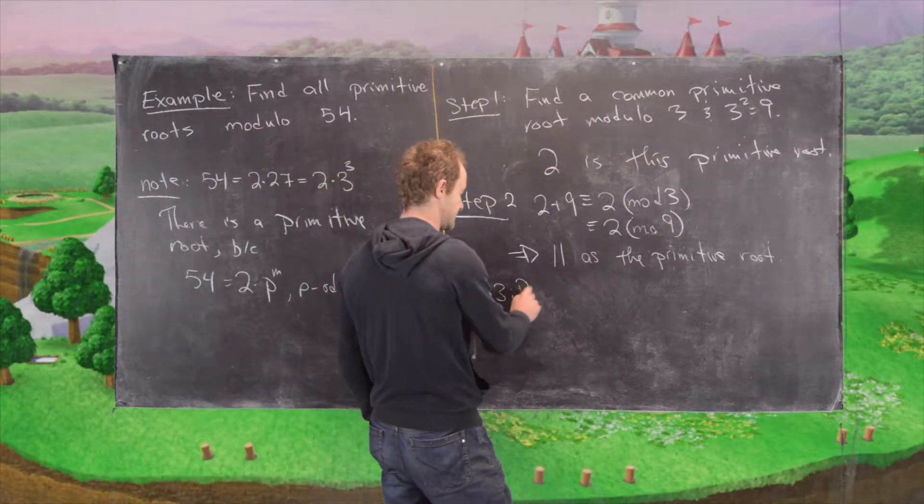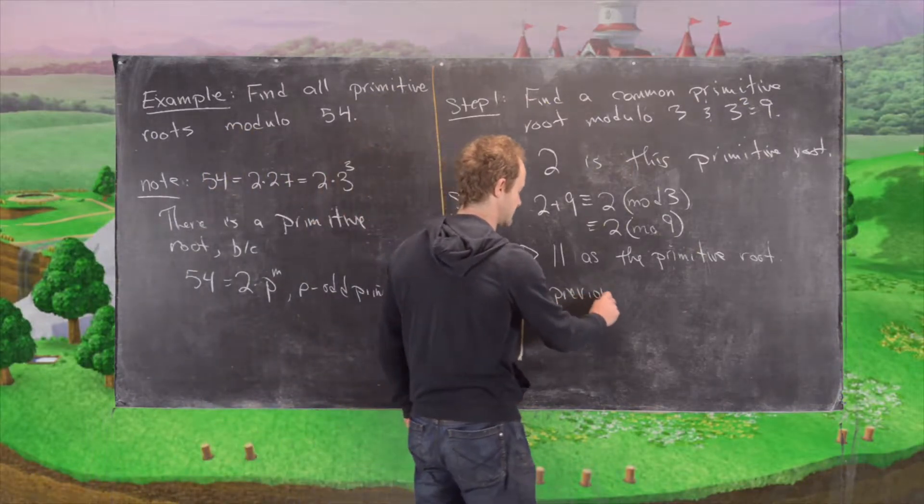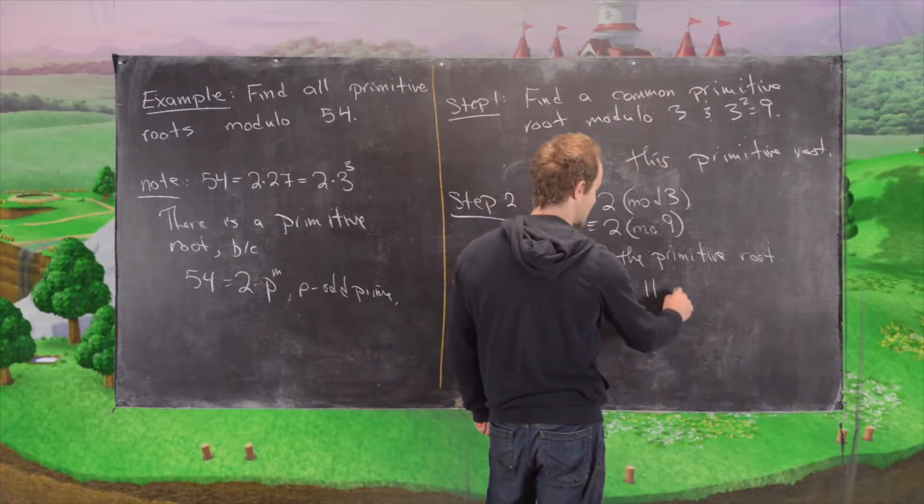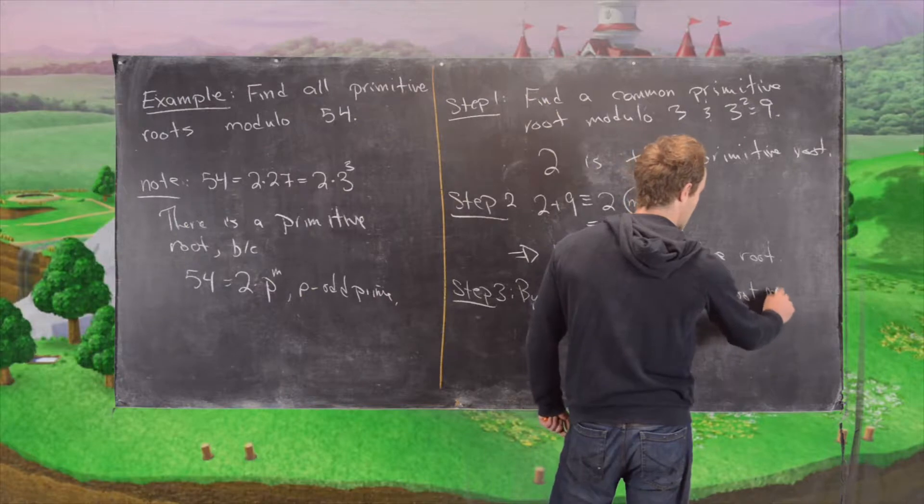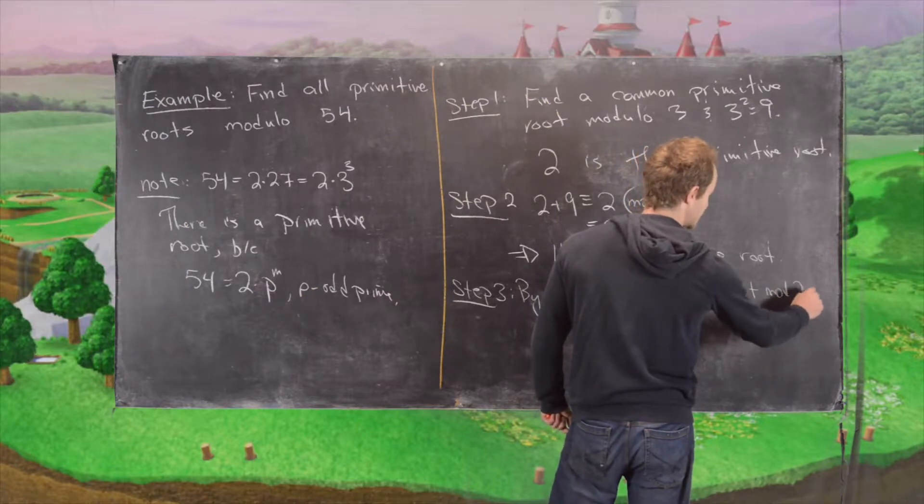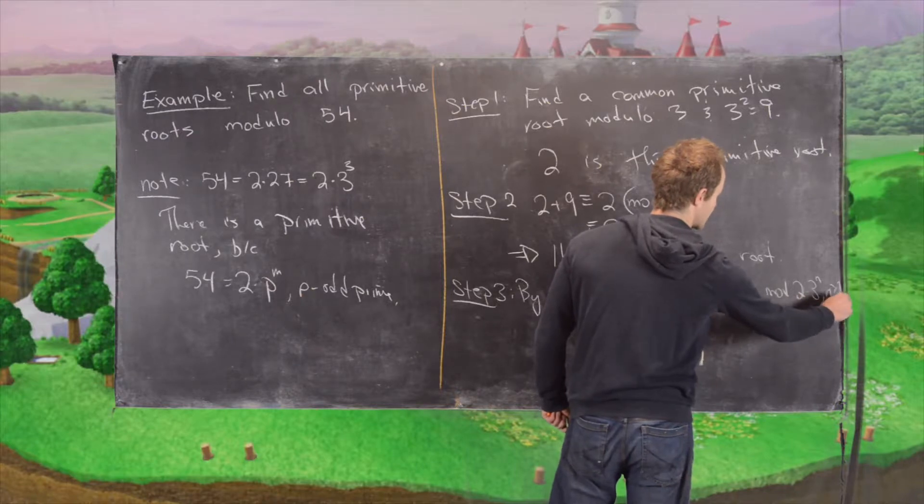we have, so by previous, we actually have 11 is a primitive root mod 2 times 3 to the n, and this is for all n bigger than or equal to 1.